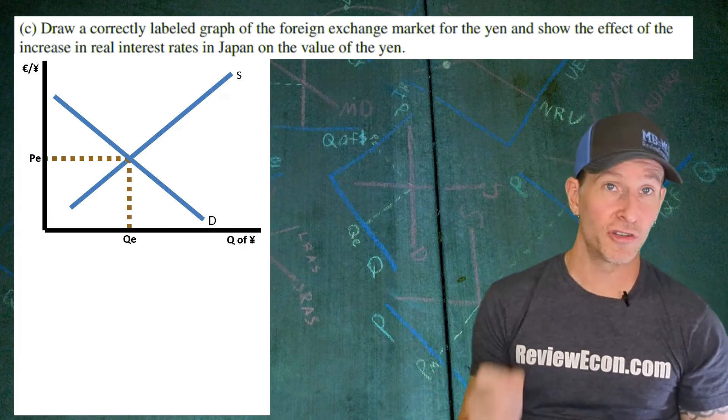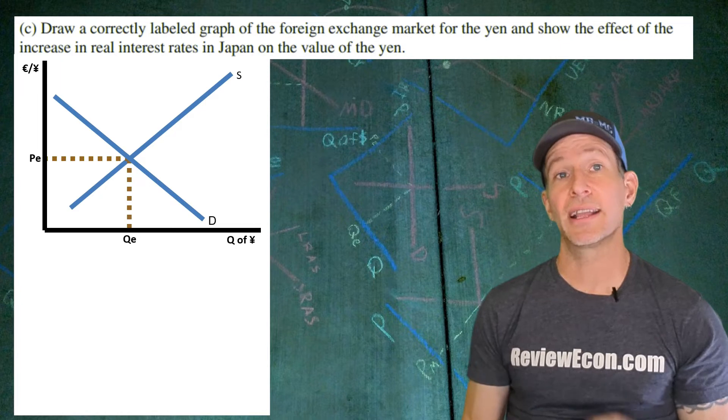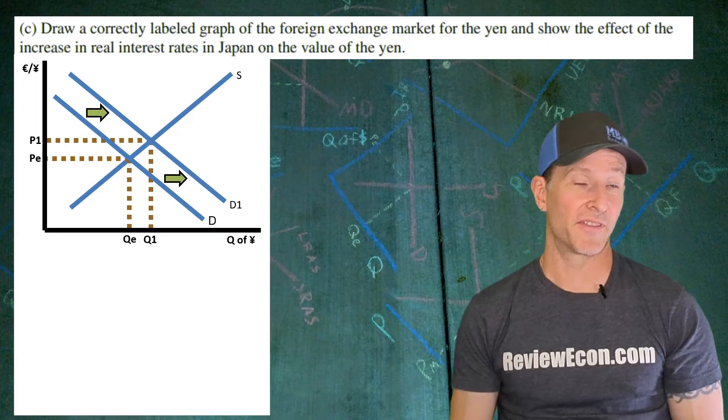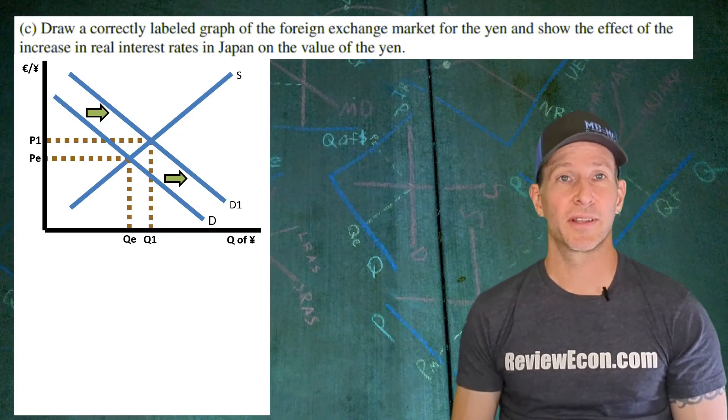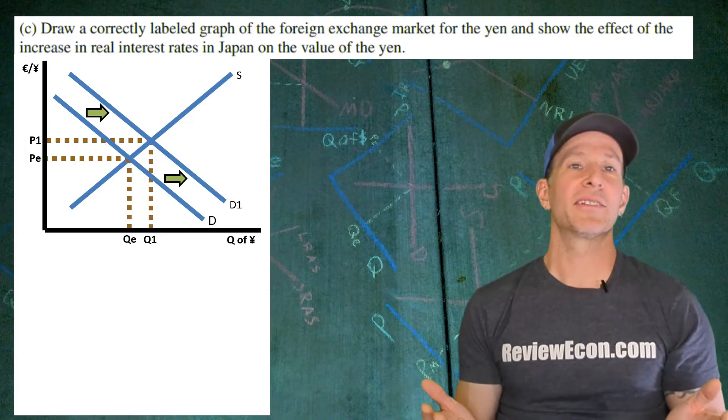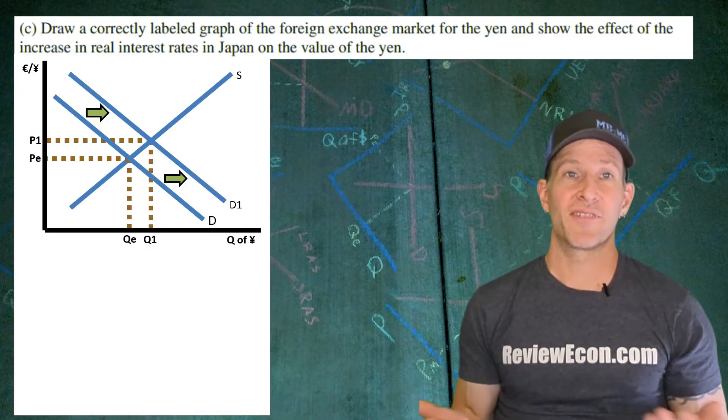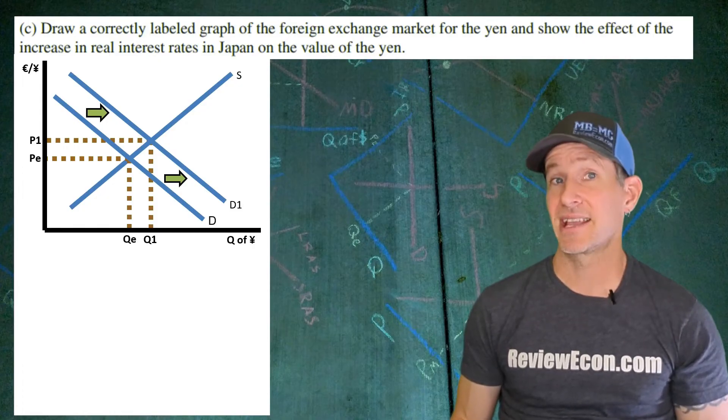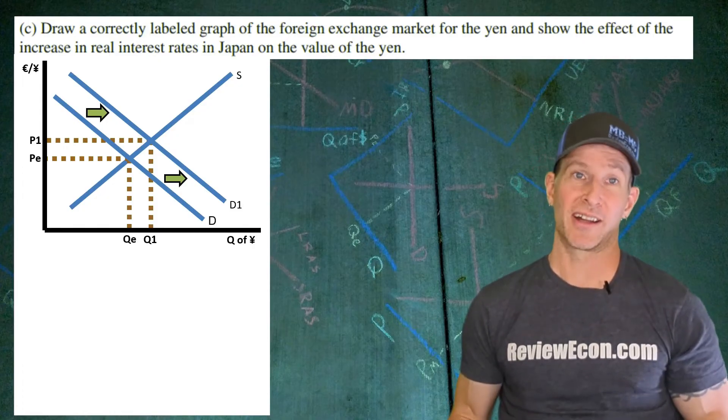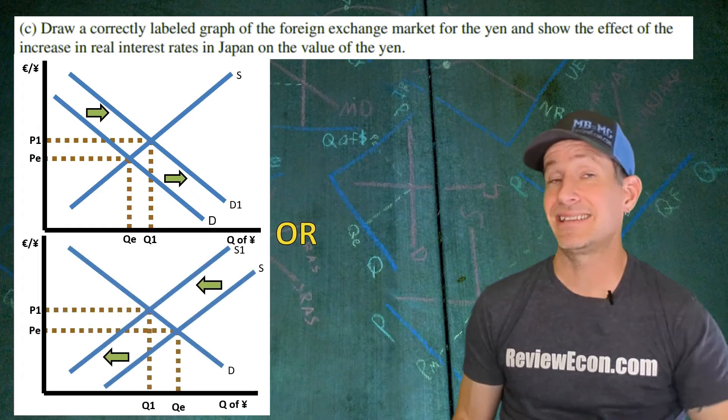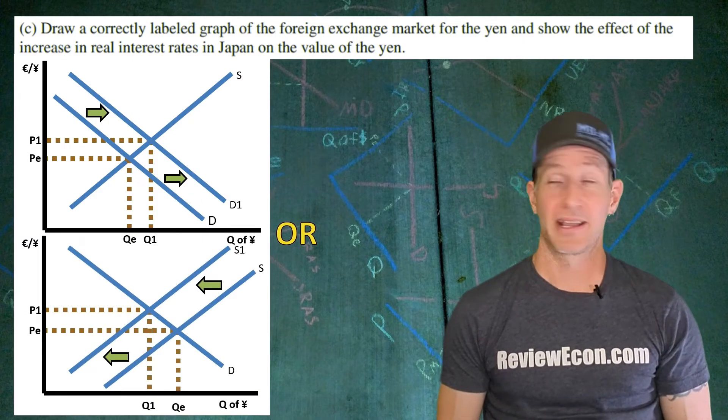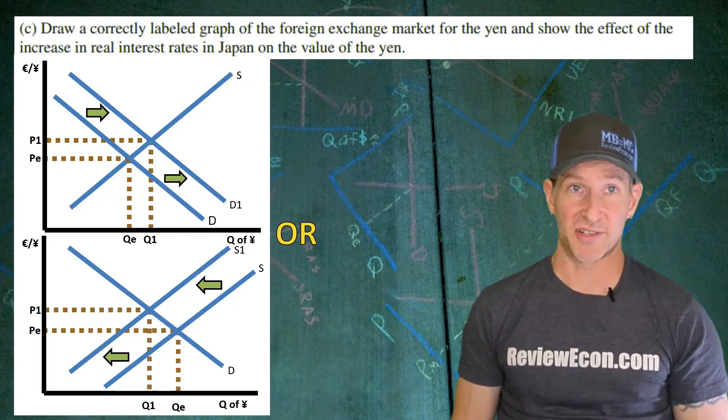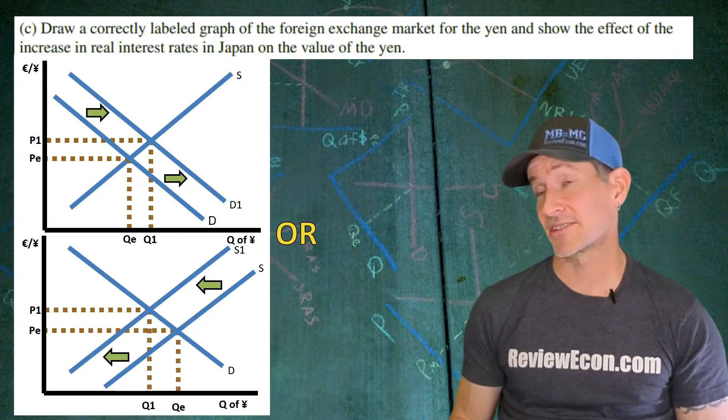Since financial capital is going to flow to Japan, one shift you can draw is an increase in the demand for the Japanese yen. When we graph that out as a shift to the right of the demand curve and show an increase in the equilibrium exchange rate, that will get you the second point. But there is another possible shift. Those foreign investors who already have possession of Japanese yen are going to be less likely to sell them because they can get high interest rates by holding on to them. So the second shift we will also see is a decrease in the supply of Japanese yen. Either of those shifts are acceptable as long as you have an increase in the equilibrium exchange rate. That'll give you a total of two points for this graph.